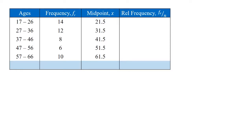The next step is to determine the relative frequency. This is the percentage of people that fall into each category. To do this, we first have to determine the sample size, which is the sum of the absolute frequency.